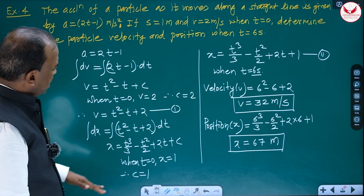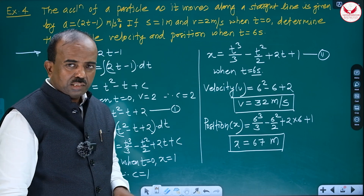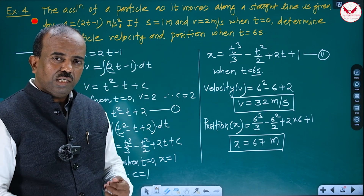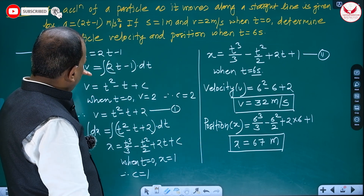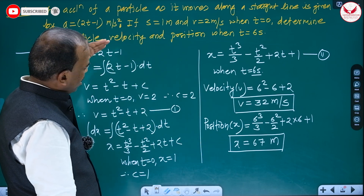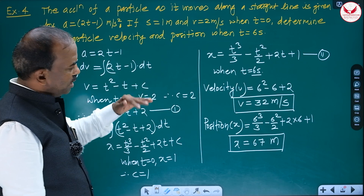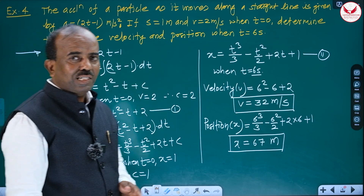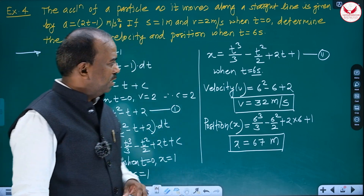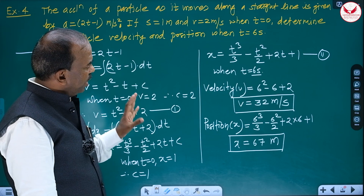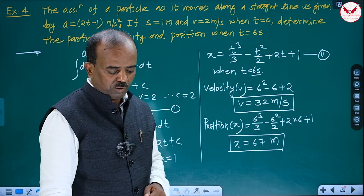To summarize: if x is given, differentiate twice to get velocity and acceleration. If v is given, differentiate once for acceleration, integrate once for position. If a is given, integrate twice for position. These problems are very simple — don't miss it. Thank you.